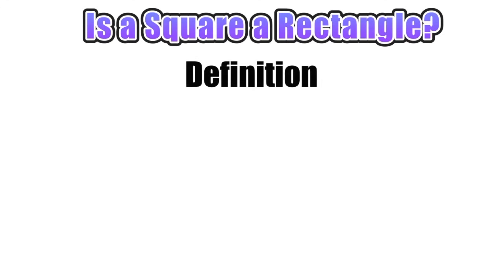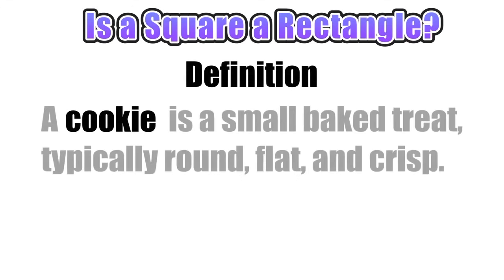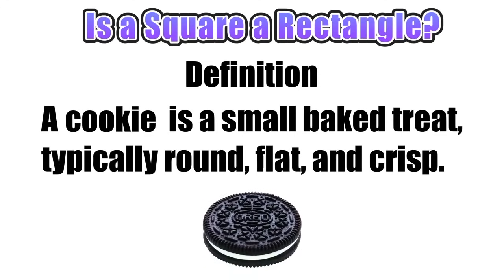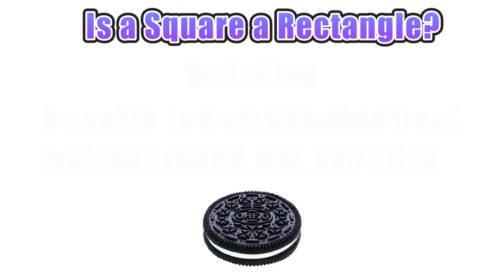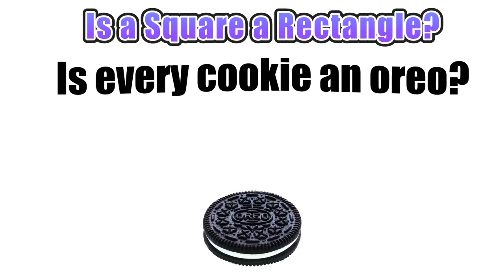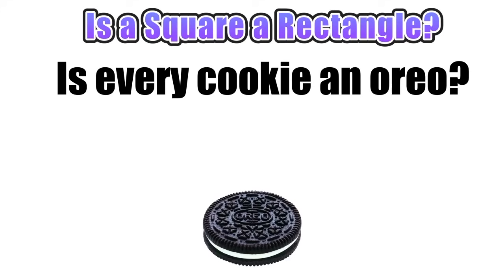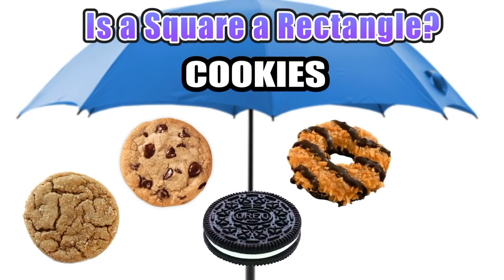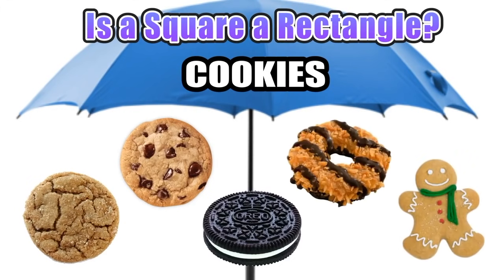We'll start with the definition of a cookie, which is defined as a small baked treat, typically round, flat, and crisp. This definition certainly applies to the Oreo cookie, which happens to be one of my favorites. Now think about the question: is every cookie an Oreo? Of course the answer is no — there are many different kinds of cookies that satisfy our definition, including sugar cookies, chocolate chip cookies, Girl Scout cookies, and gingerbread cookies.